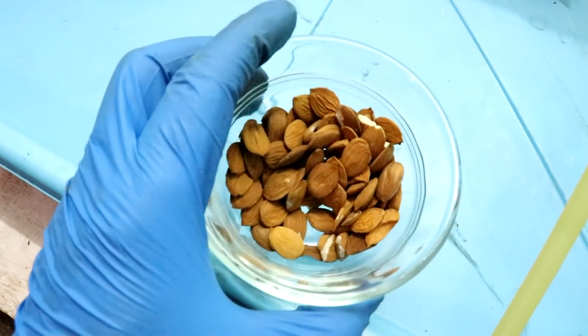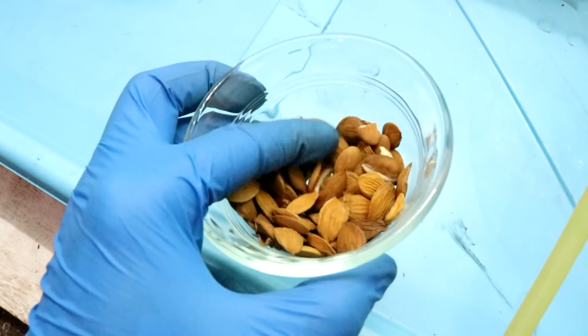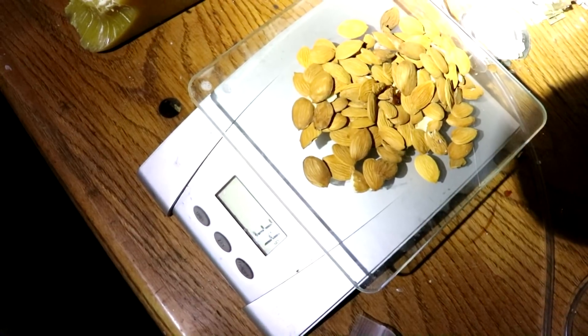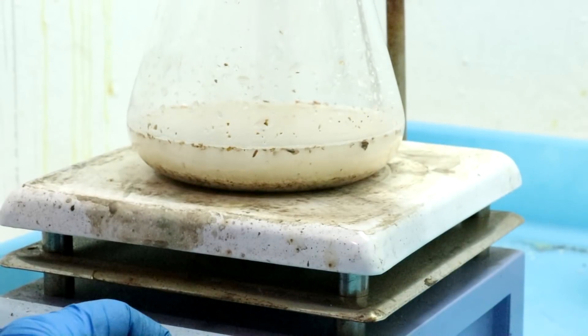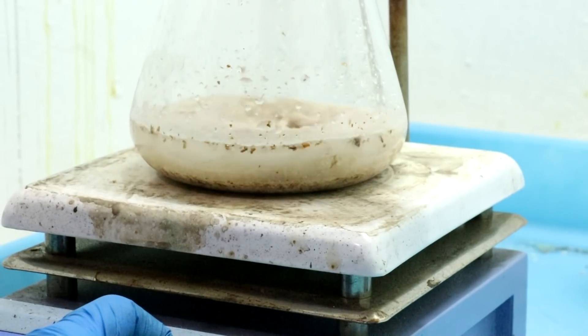Here's all of the almonds extracted from the peach pits. 34 grams. Okay, I've got the chopped up almond pieces inside of the flask.